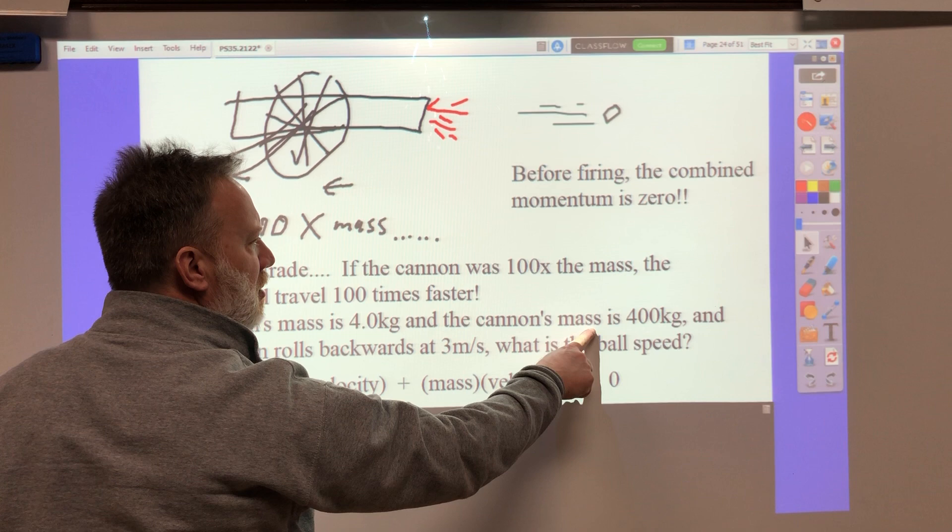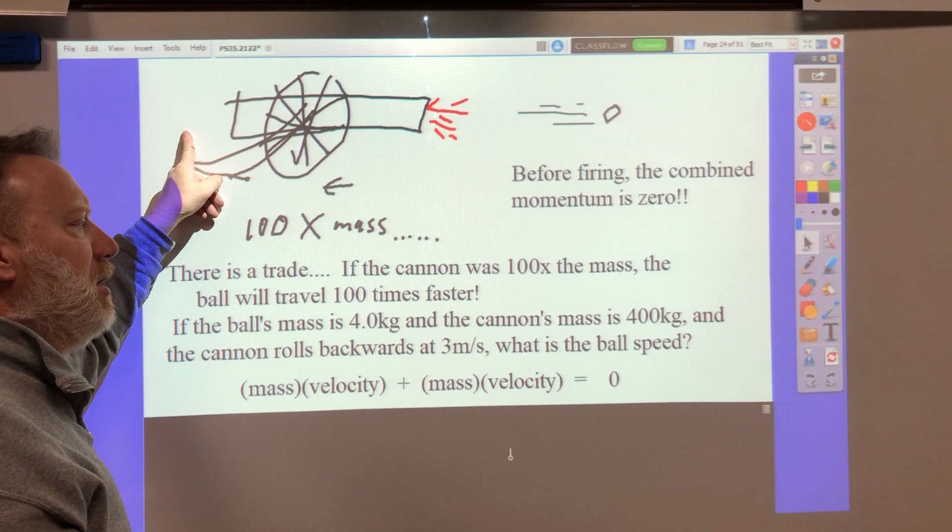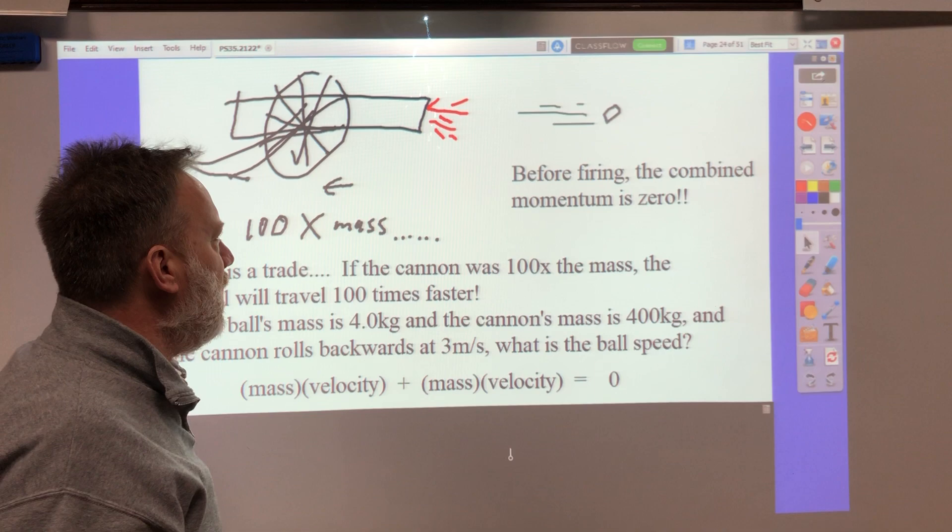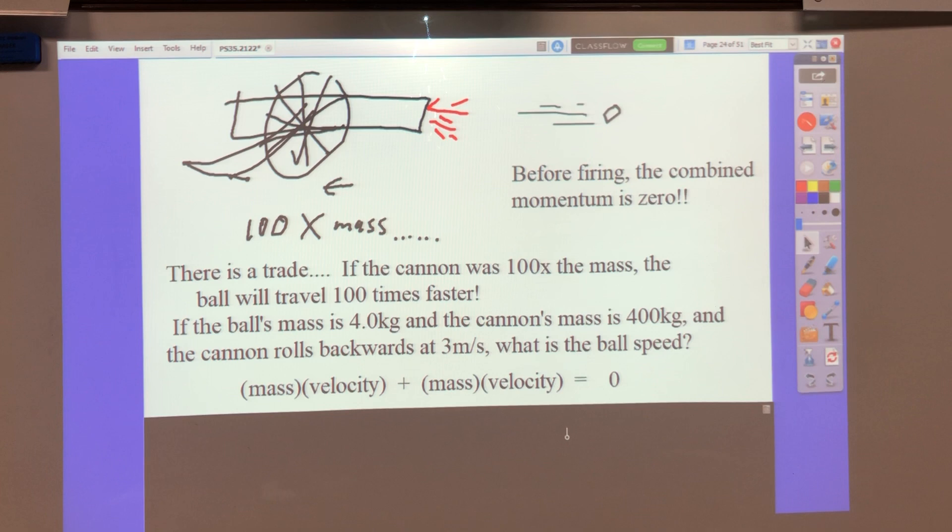So if the ball's mass is four kilograms, it's about nine pounds or so. And the cannon's mass is 400 kilograms, which is like 900 pounds. And this cannon goes backwards at three meters per second. What is the ball's speed? Now an easy way to do this, if you want the easy way, if this is a hundred times more massive, and that's a hundred times faster, if this is three meters per second, a hundred times faster than three is... Let's show you the official way to do it.